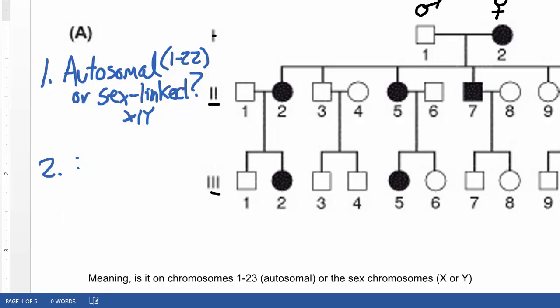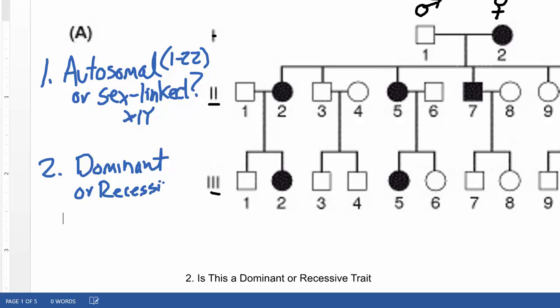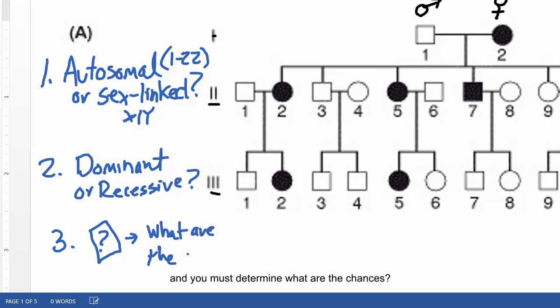The second question I want you to ask yourself is, is this a dominant or recessive trait? And then number three, there's often going to be a question mark related to a baby, and what that question mark is asking you is what are the chances, what's the probability that this individual will have the disease?